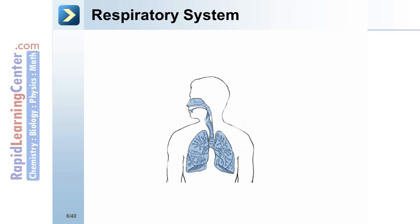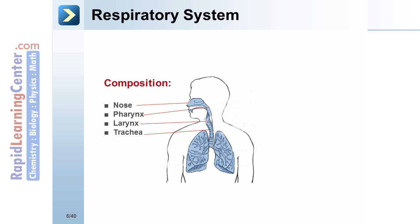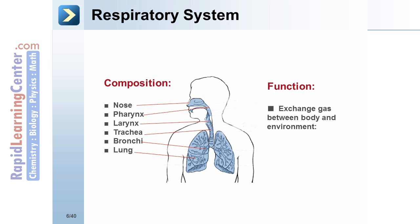Respiratory system: composed of the nose, pharynx, larynx, trachea, bronchi, and lungs. Its function is to exchange gas between the body and the environment — inhaling oxygen and removing carbon dioxide.